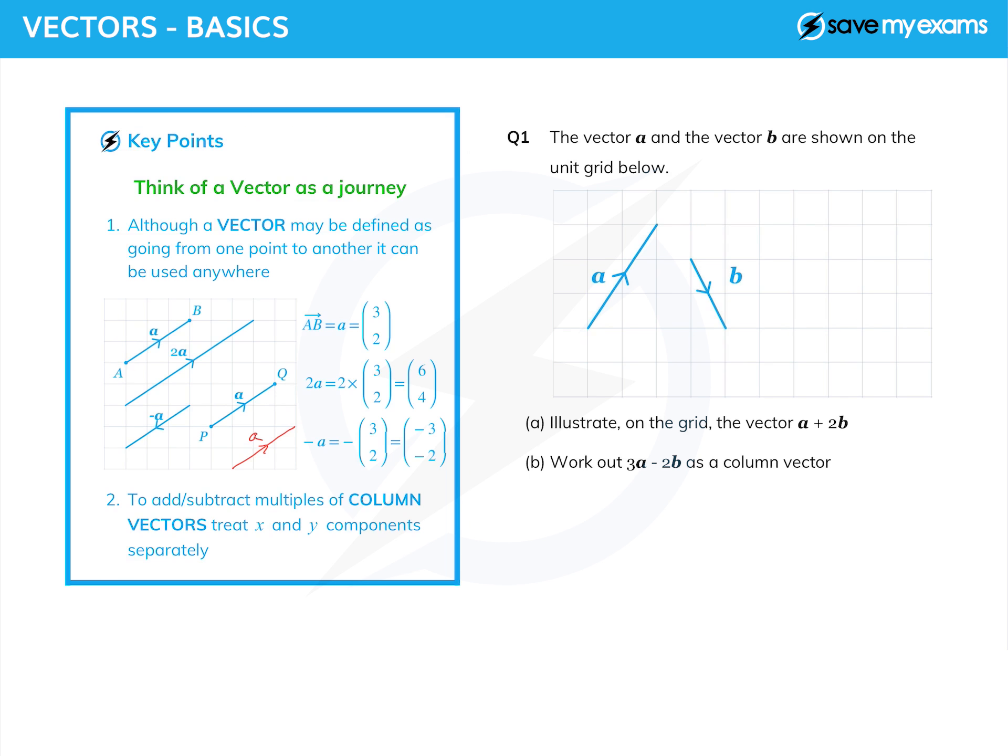It's just the vector a, and that is the journey. So don't get tied down with the points. Little things to notice: 2a is just in the same direction—there's one and there's the second one—so 2a is twice as long in the same direction. And minus a is the same vector but backwards, so it is parallel but going in the opposite direction.